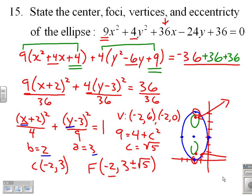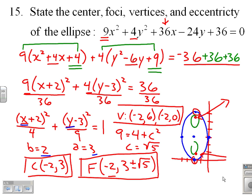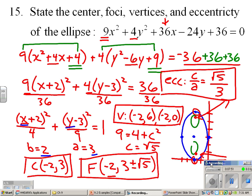So we've got all over the place here. We've got centers. We've got the foci. We've got the vertices. We've got the graph. We just need the eccentricity. And the eccentricity, a measure of the roundness, is just c on a, or in this case, square root of 5 on 3. So we've got the center, foci, vertices, and eccentricity.